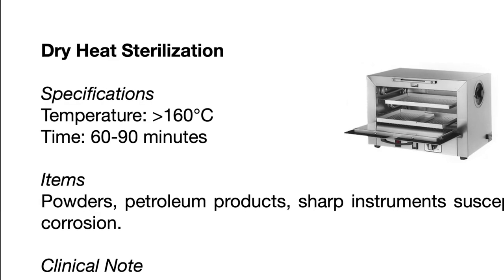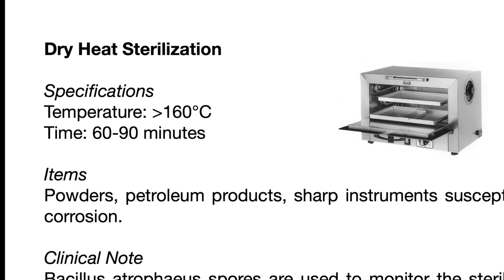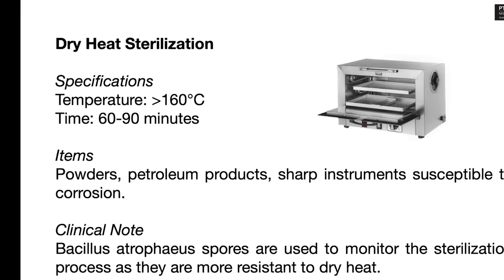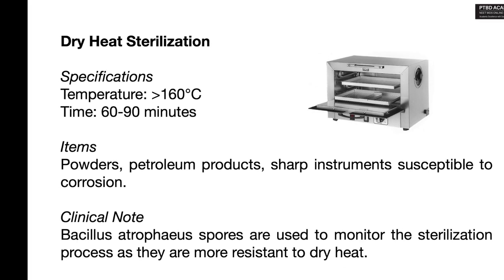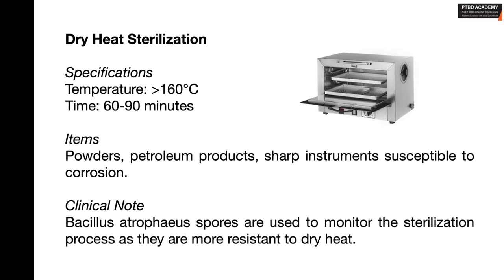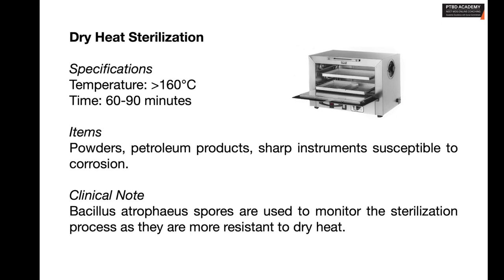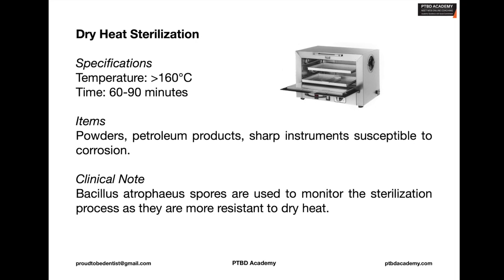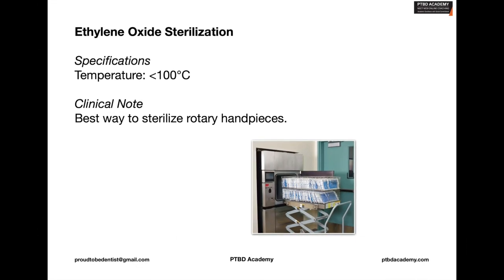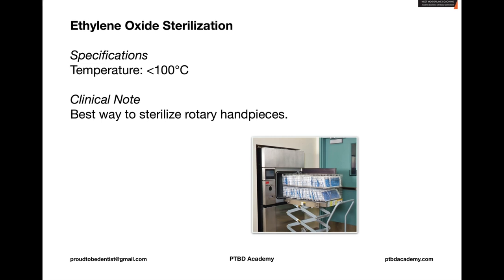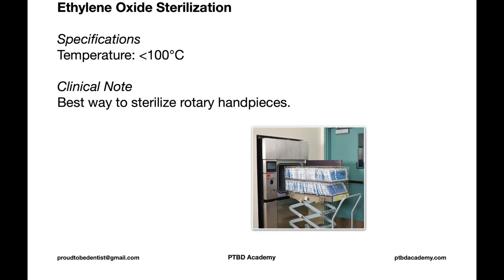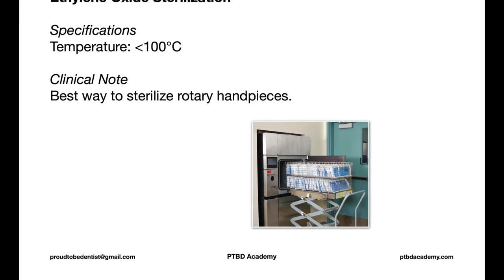With chemiclave, carbon steel and corrosion-sensitive instruments can be sterilized without rusting. Now coming to dry heat sterilization — the temperature exceeds 160 degrees centigrade for a duration of 60 to 90 minutes, so it's comparatively taking longer time. Currently, various sterilization methods are replacing dry heat sterilization.